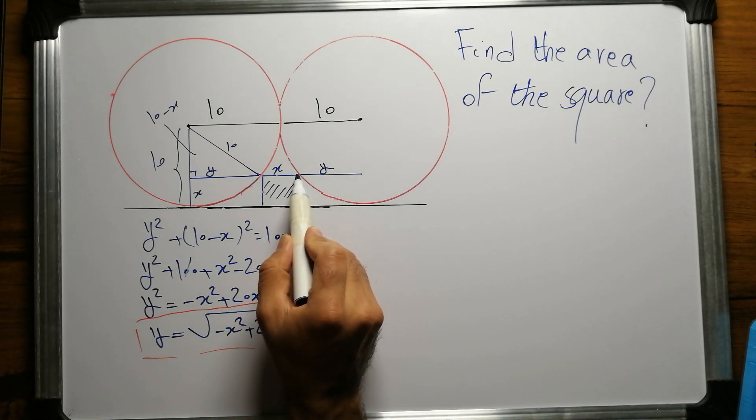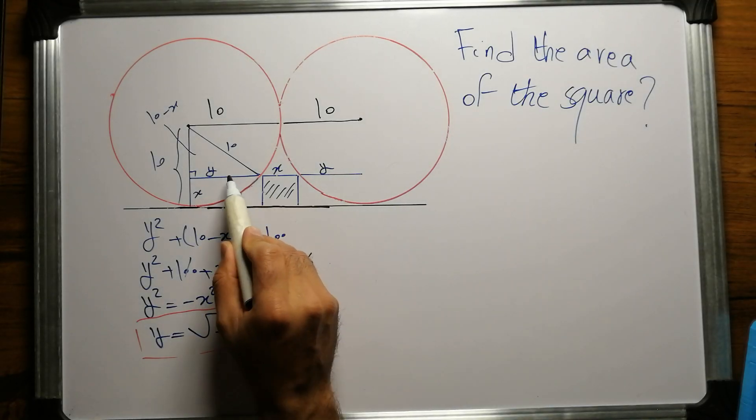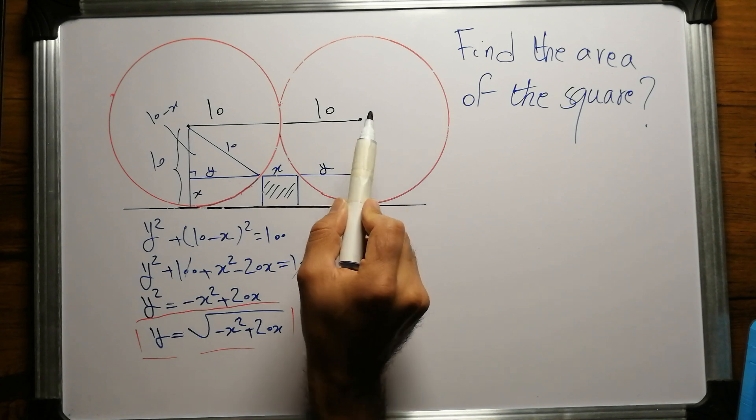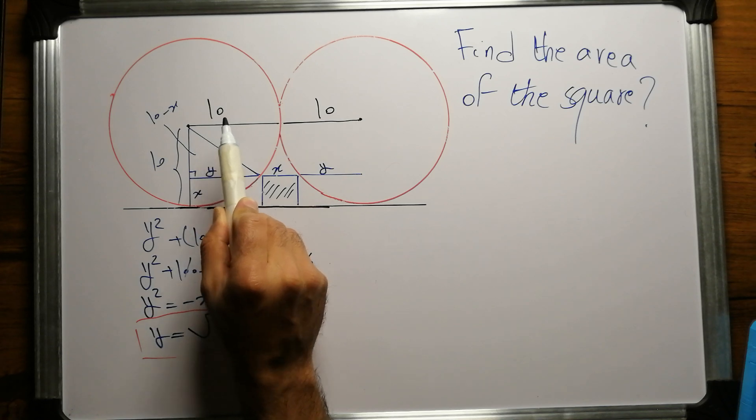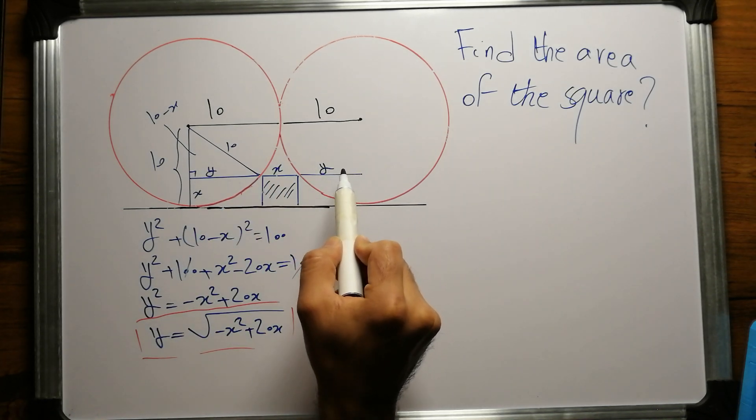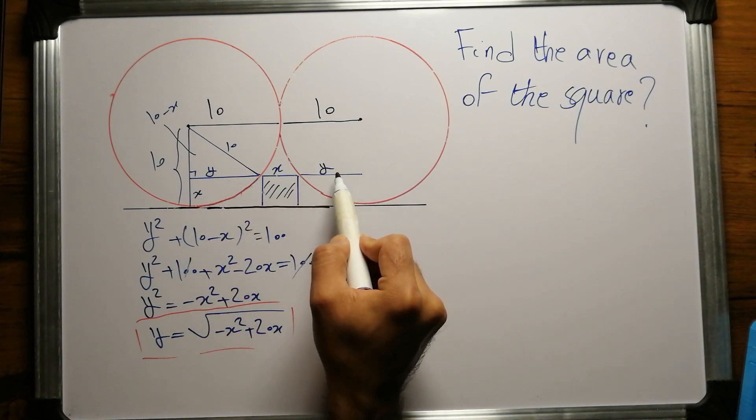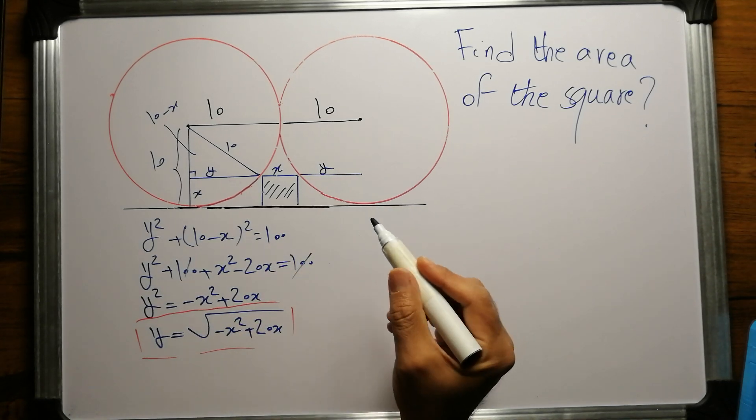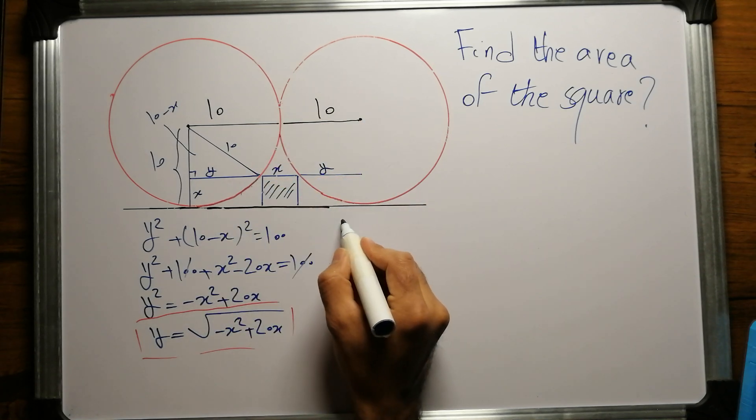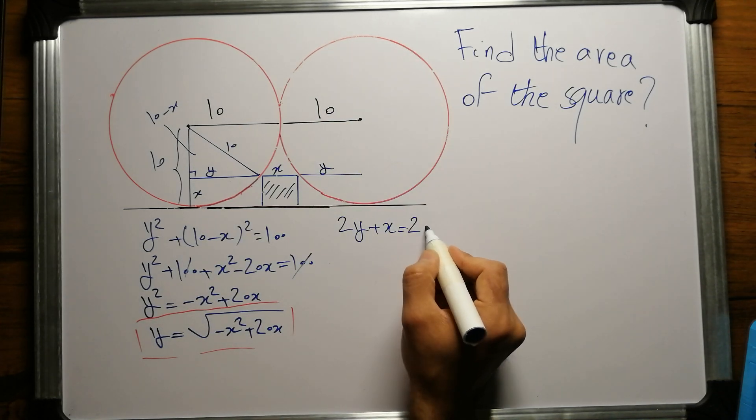Now let's extend this side of this vertex of this square to the other side to the same length of y. If this is y, this also must be y. We know that if we add these two radii together, the length is 20, and it is equivalent to this line here which is comprised of y and y and this little x. Now I think we can find x because we have the value of y in terms of x. We know that 2y + x equals 10 + 10, which is 20.